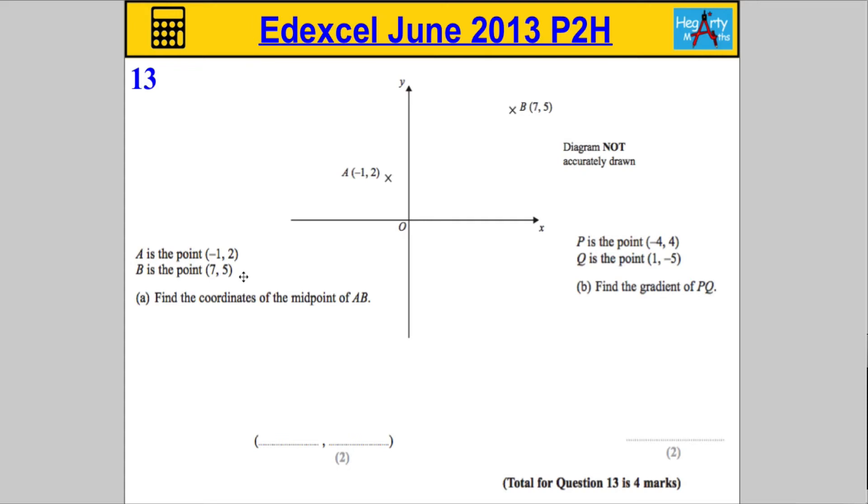Question 13. A is the point negative 1, 2. B is the point 7, 5. And part A, we're asked to find the coordinates of the midpoint of AB.